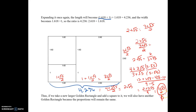This shows us that if we take a larger golden rectangle and add a square to it and keep doing this infinitely, we will always get another golden rectangle, because the proportions remain the same.